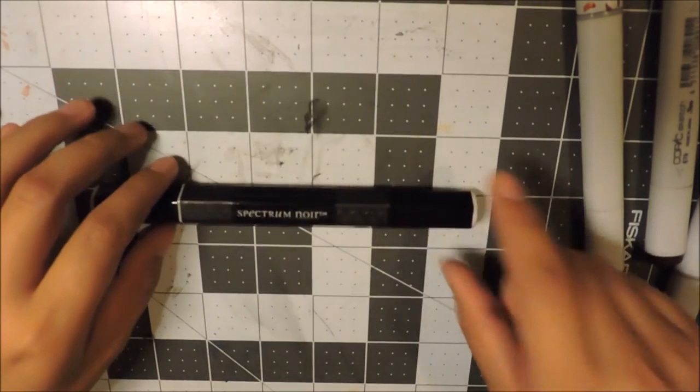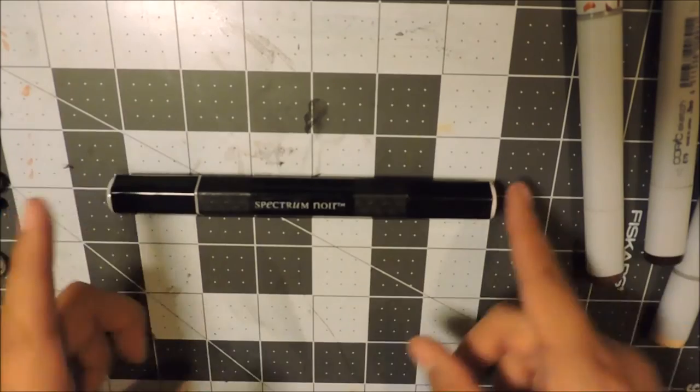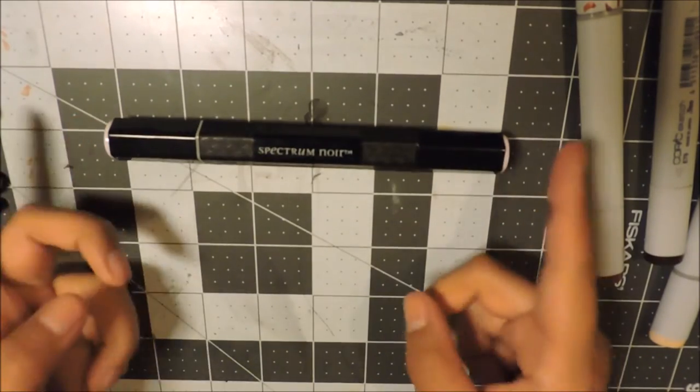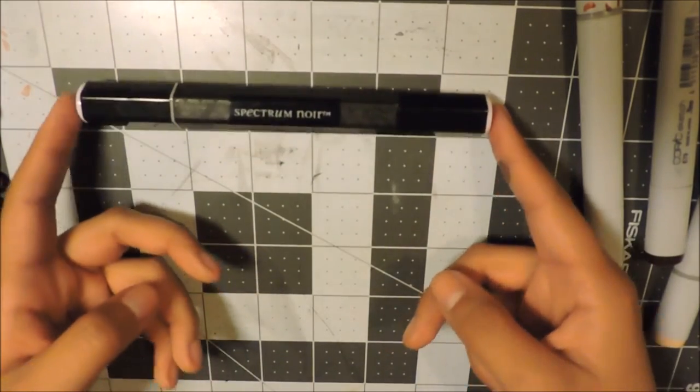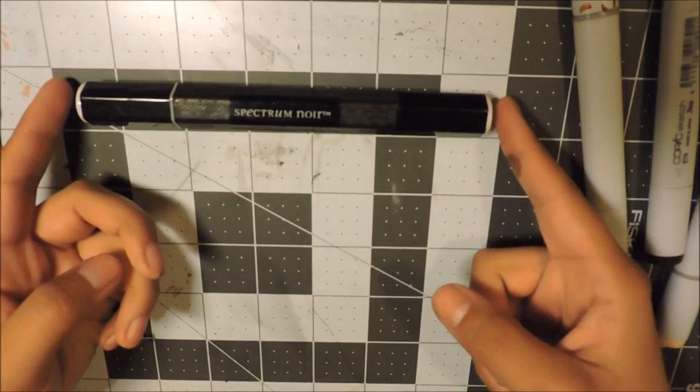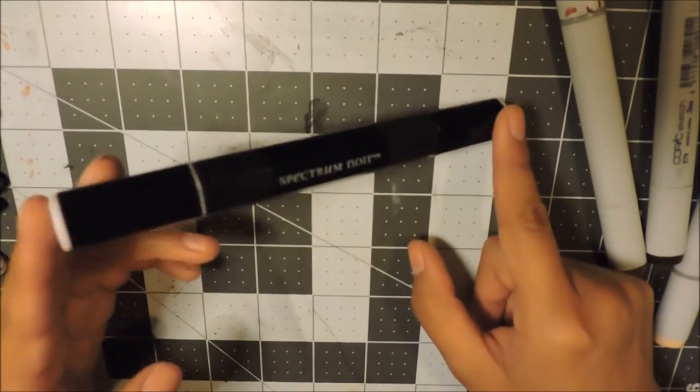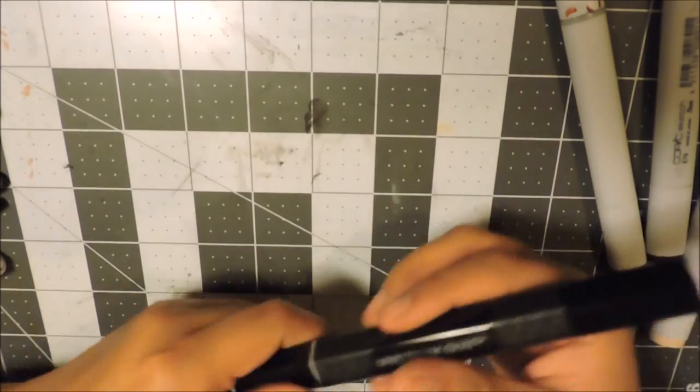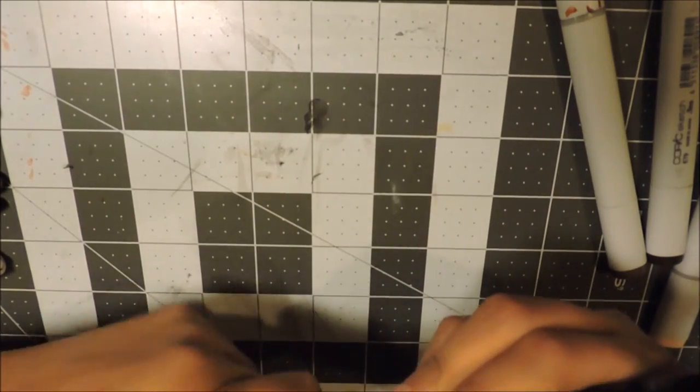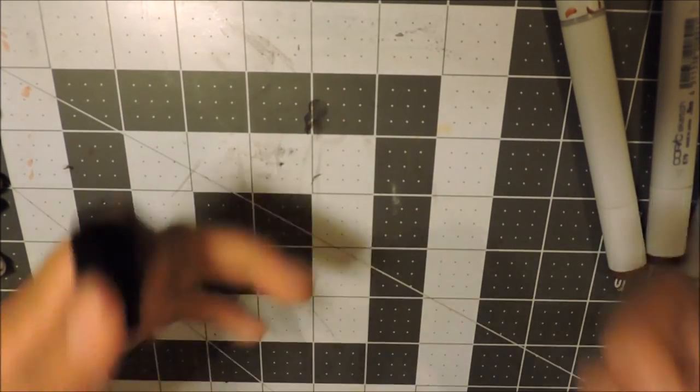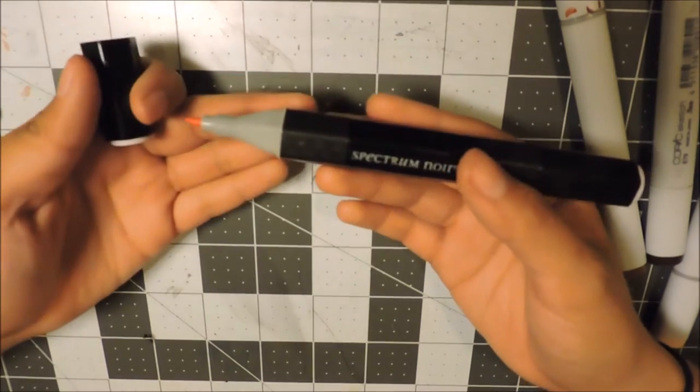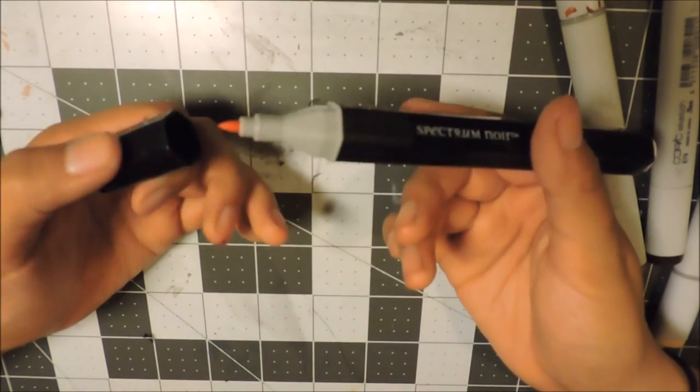Now for the Spectrum Noir marker, I only have one marker. It came in a set I believe like 24 markers at Hobby Lobby. This one is in PP3, which is a pink.